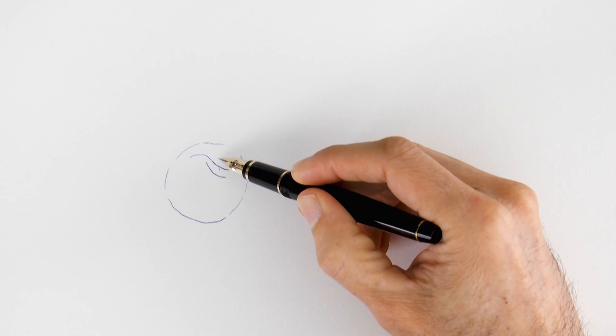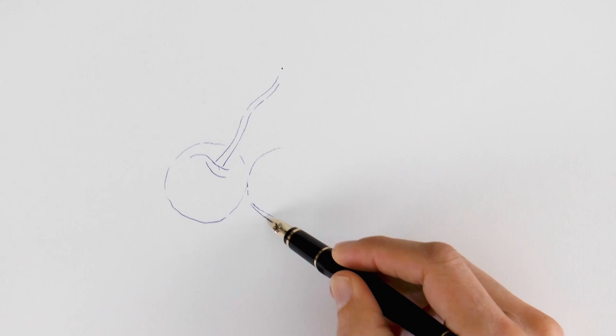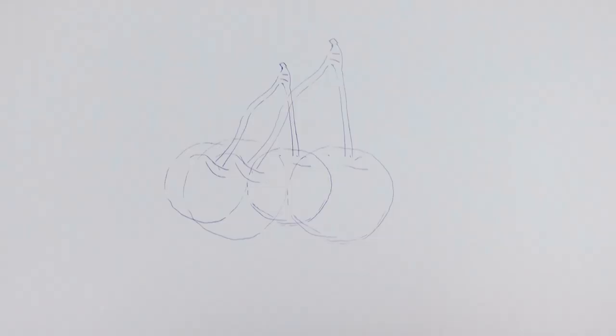circle, not perfectly round and then sketching the stem, like so. Then another sort of circle for the second cherry and the stem which will join the other one.